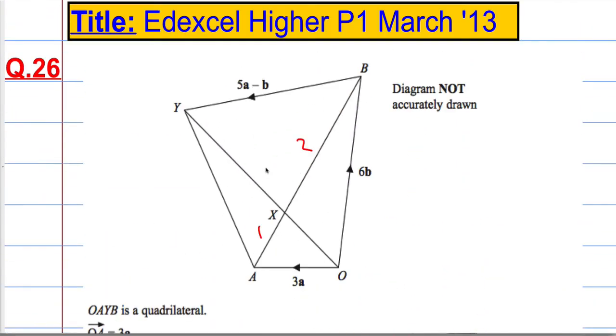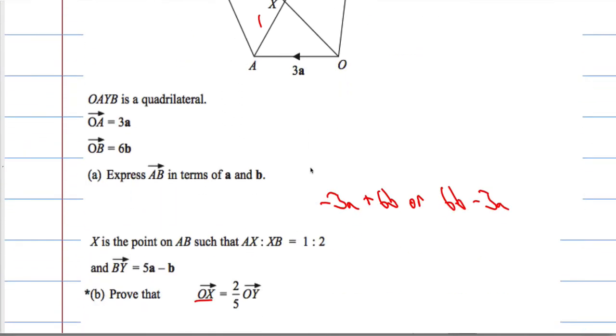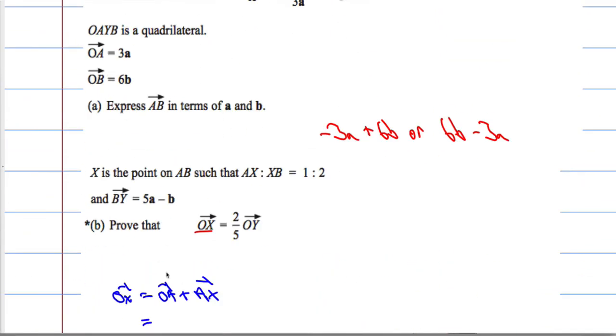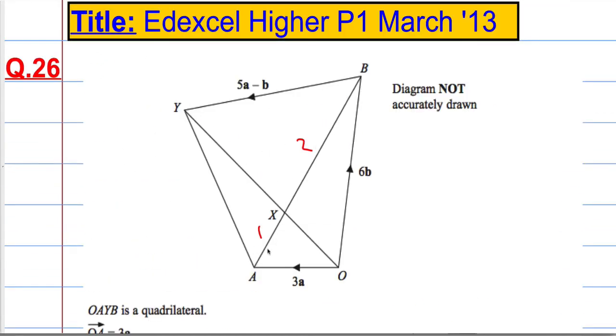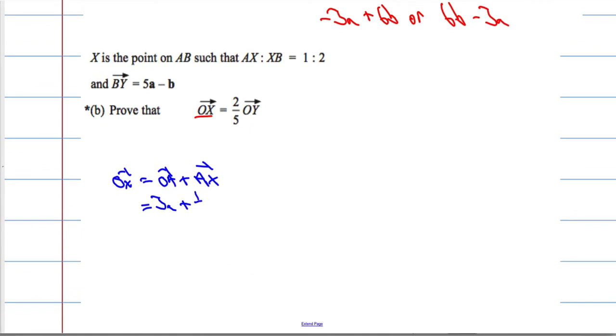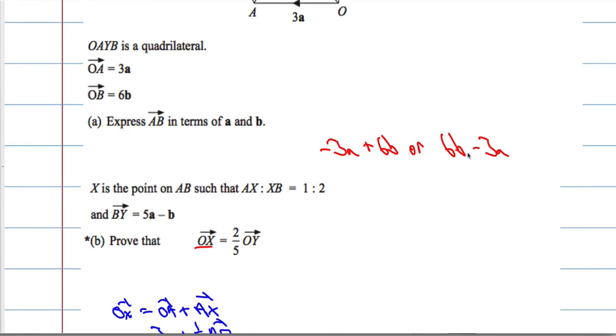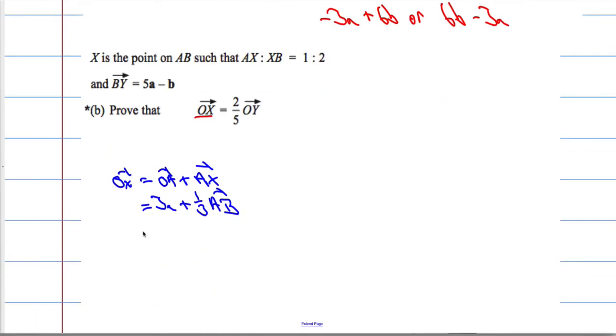And AX, we know AB. AX will be one-third of AB. So OA is 3a, and AX is one-third of AB. So plus one-third of the vector AB. And we've worked out AB. AB is 6b minus 3a. So that equals 3a plus one-third of 6b minus 3a, which equals 3a plus 2b minus a, which equals 2a plus 2b.